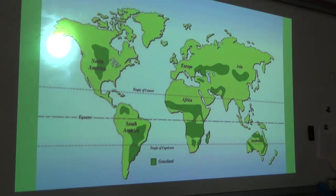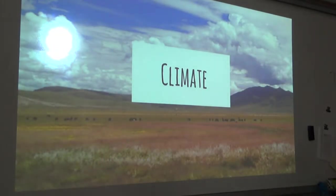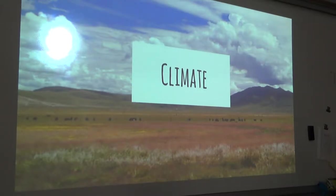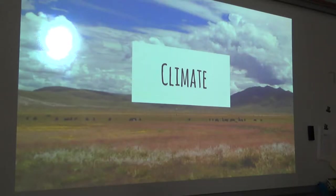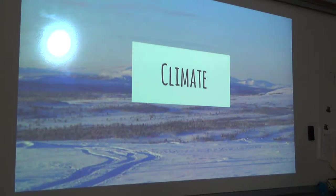The climate of temperate grasslands plays a very important role in shaping the environment. Temperate grasslands are known for hot summers — it can be over 100 degrees — and cold winters that can go as low as negative 40 degrees. The amount of rainfall in temperate grasslands distinguishes them from savannahs, as temperate grasslands receive less annual rainfall than savannahs — only about 10 to 35 inches per year. The growing season occurs in the traditional spring and summer months.